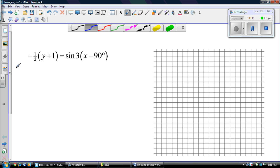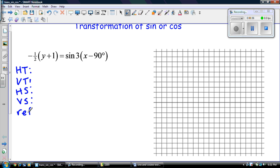We begin each problem the same way. So we write down our HT (horizontal translation), VT, HS, VS, and my REF. The horizontal translation is over here with the x, and it's the opposite of what's there. So it's 90, my HT is 90.